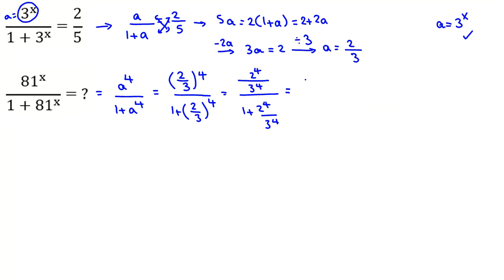3 to the 4 is 81, 2 to the 4 is 16, all over 3 to the 4 is 81, here 81 plus 16.